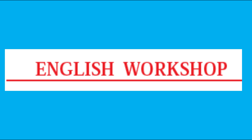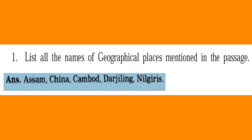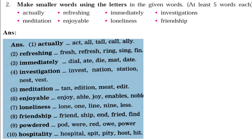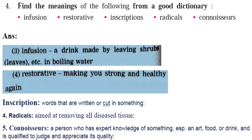Now let's begin the English Workshop for this lesson. Activity one: list all the names of geographical places mentioned in the passage — for example, China, Cambodia, Darjeeling, and others. Activity two: make smaller words using the letters in given words — at least five words each. Words include: refreshing, immediately, investigation, meditation, enjoyable, loneliness, friendship. For example, from 'actually' you can make: act, all, tall, call. Activity three: find the meanings of the following words from a good dictionary.